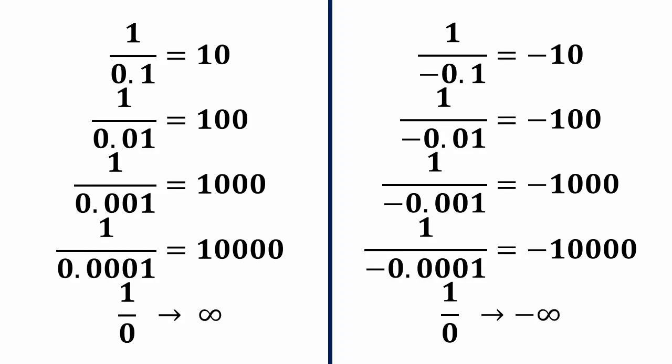So 1 over 0 is undefined and 0 by 0 is indeterminate form. Thank you so much.